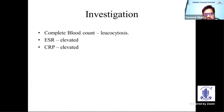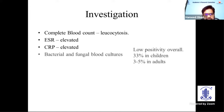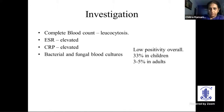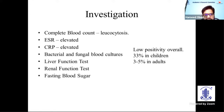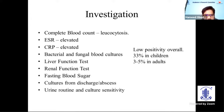Investigations include a complete blood count, which usually shows leukocytosis. ESR and CRP will be elevated, indicating infection or inflammation. Bacterial and fungal cultures should be taken before starting IV antibiotics — though overall positivity rate is low. Liver and renal function tests should be ordered as baseline, since antibiotics can be nephrotoxic. Fasting or random blood sugar should be ordered to check for uncontrolled diabetes. Cultures from discharge or abscesses have a higher positivity rate.